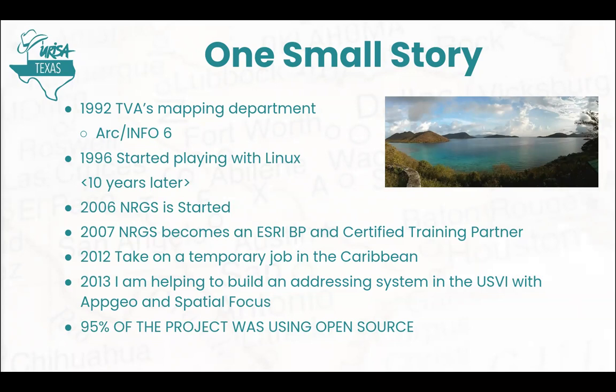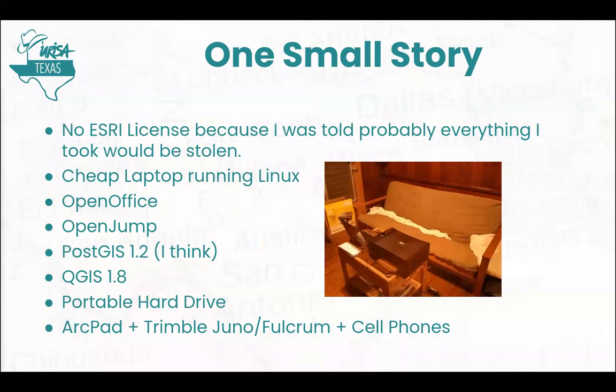Much to my chagrin, 95% of this project was using open source. They were using PostGIS, they were using Open Jump, and it was a weird and wild time of command line tools and just bare basic geo. It was really crazy. And I had a full license to ARC Info, but everybody said, hey, don't take your really good workstation down there — it's probably going to end up getting stolen, or you're going to drop it in the ocean.